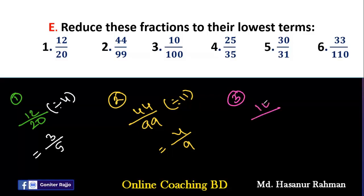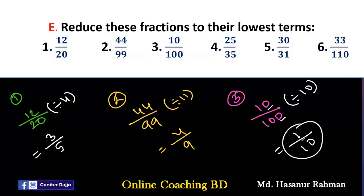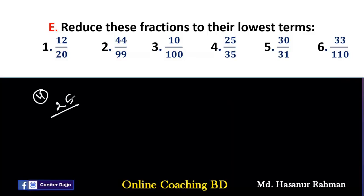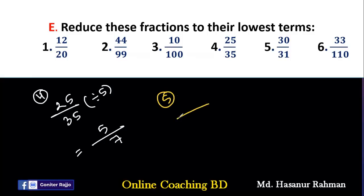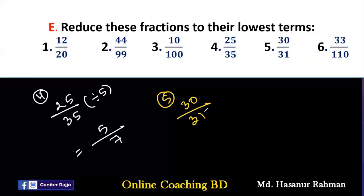Number 3: 10/100 — the unit digit is 0, so we divide by 10: 10÷10=1 and 100÷10=10. So 1/10 is the lowest term of 10/100. Number 4: 25/35 — the unit digit of both is 5, so both can be divided by 5: 25÷5=5 and 35÷5=7, giving 5/7. Number 5: 30/31 — we will not find any common factor of 30 and 31, since 31 is a prime number with only factors 1 and 31. So this is already in its lowest term.